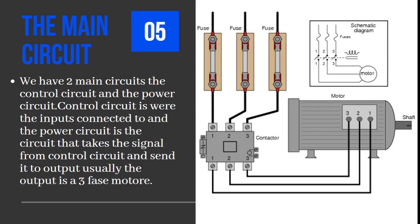The control circuit is the circuit that takes the signal from the input and sends it to the output. This means the control circuit is the mind or processor of the whole operation — it processes all operations and converts input signals into output commands.